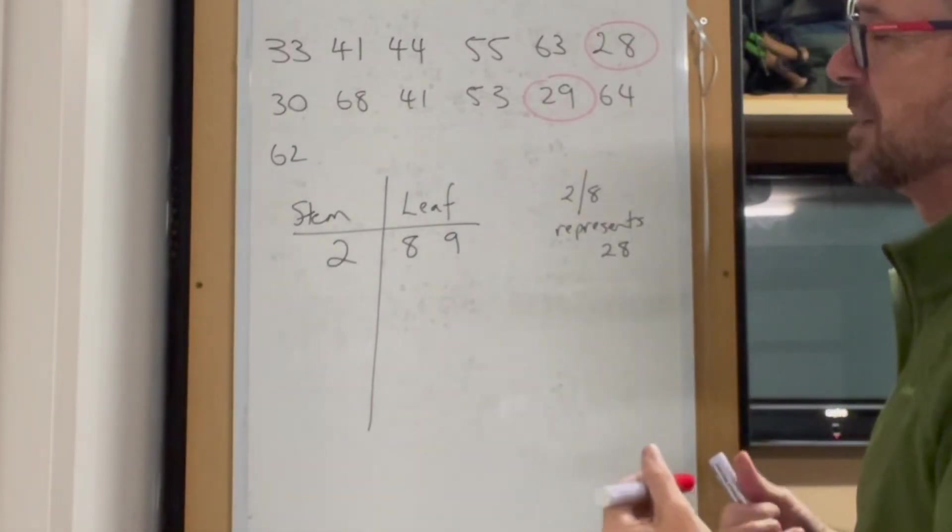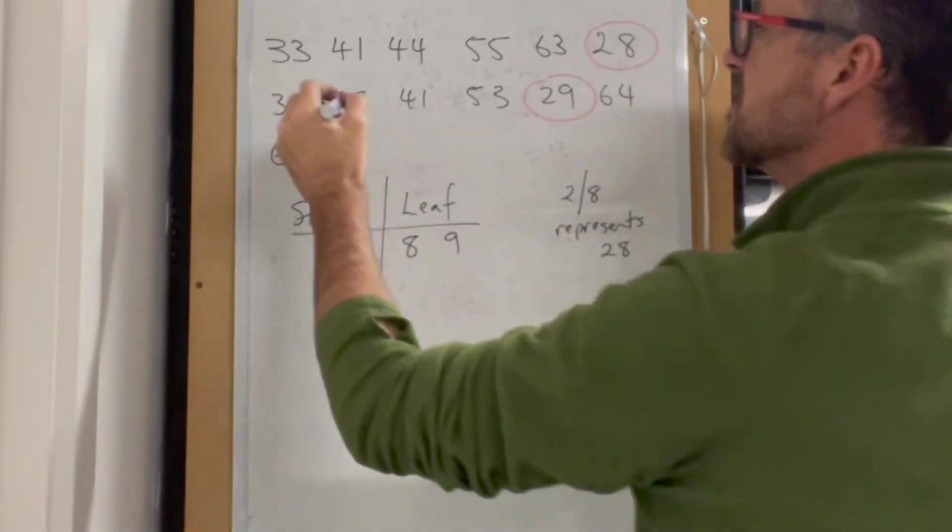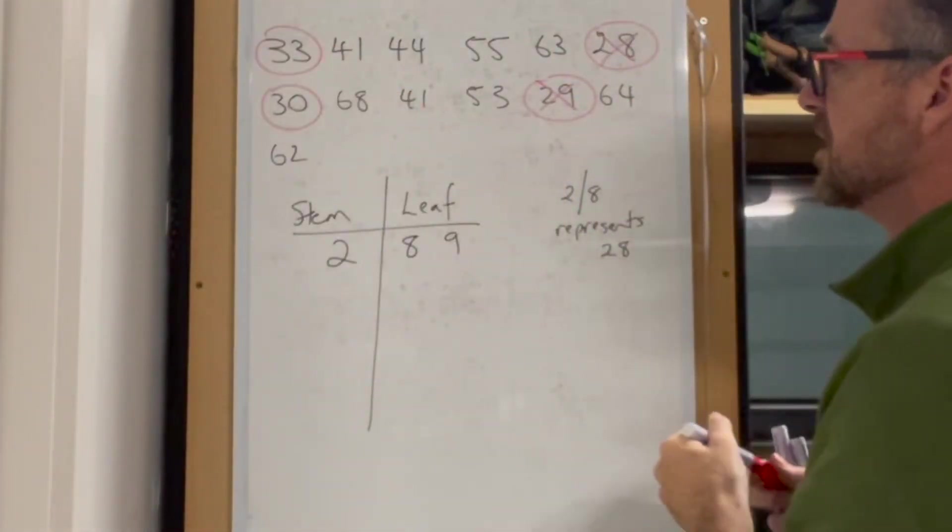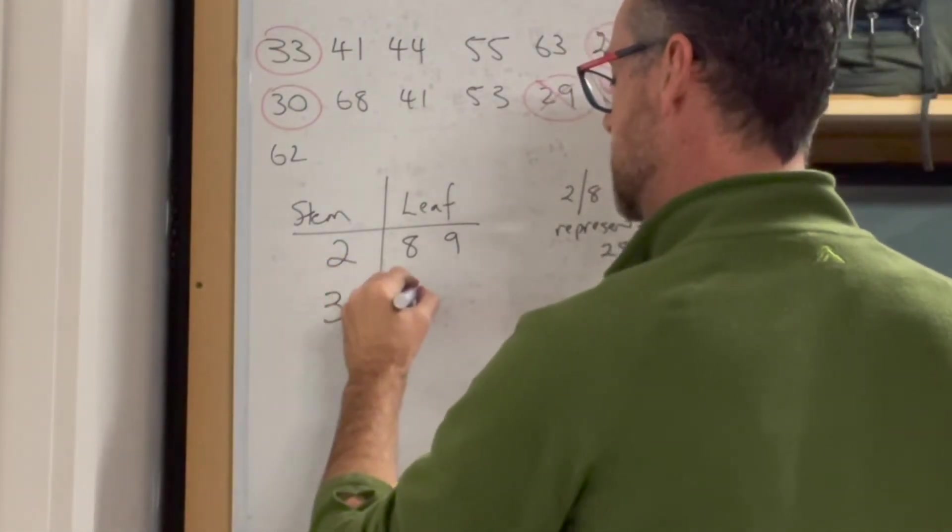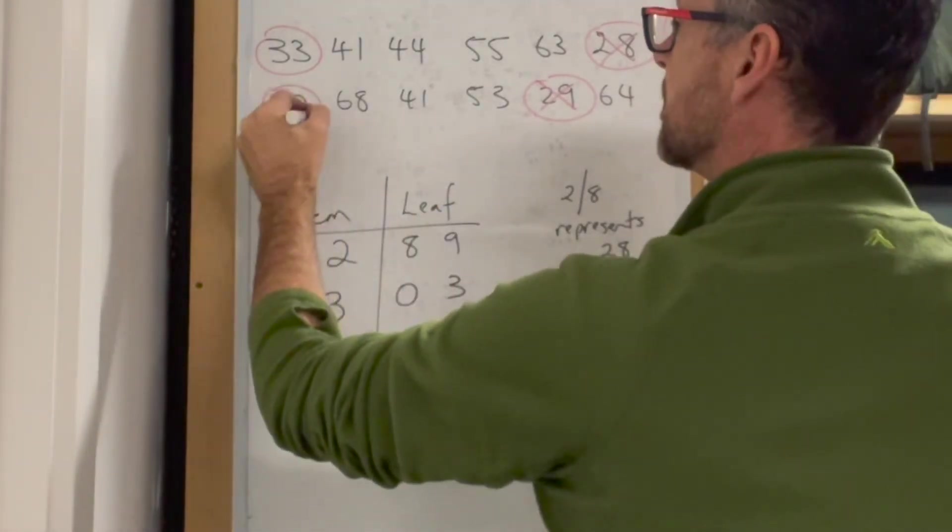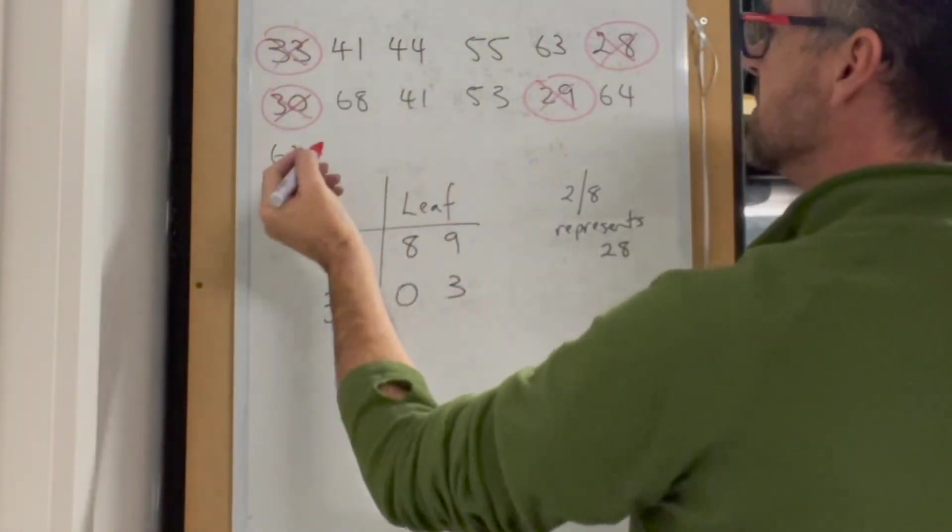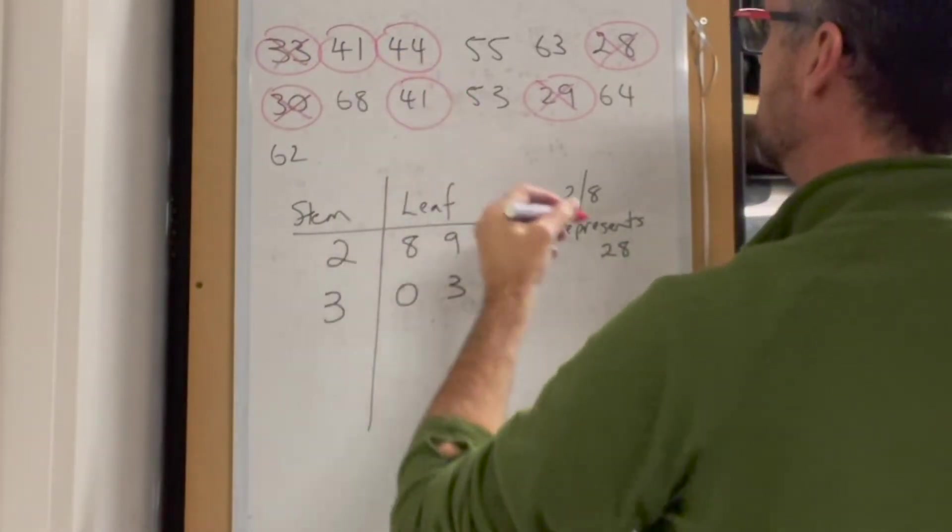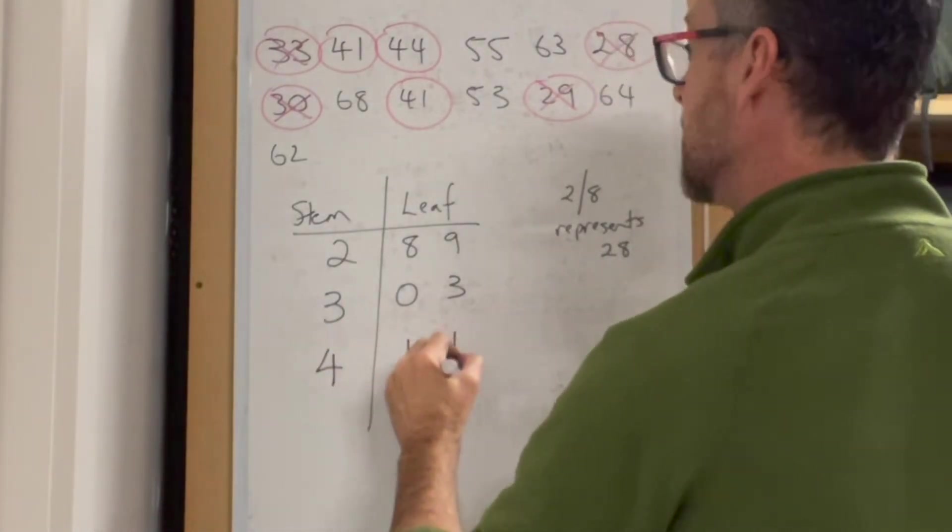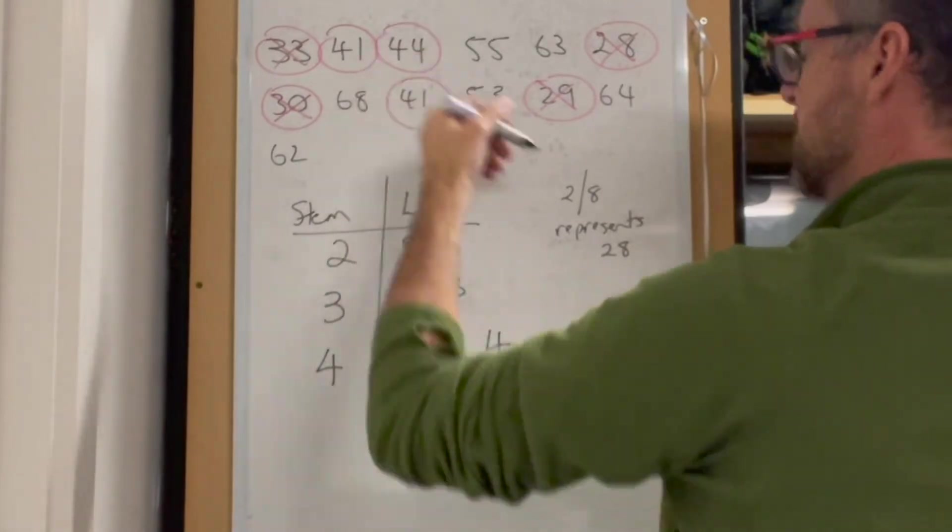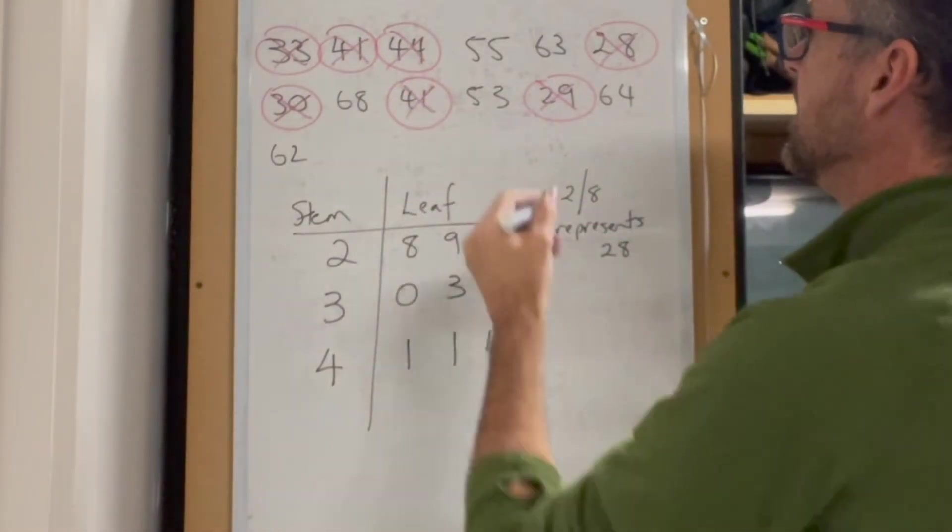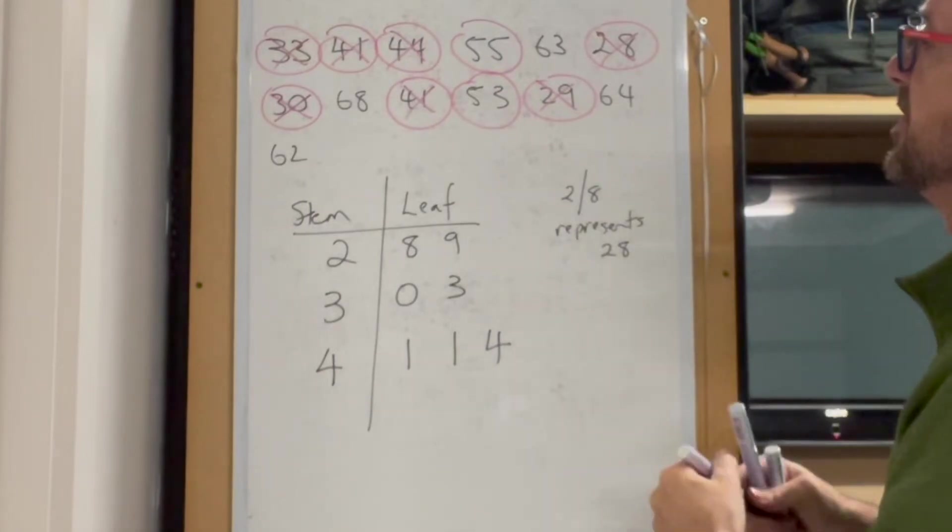Now the 30's: I've got 30 and 33, so I cross them off and write 0 and 3. For the 40's: 41, 44, and 41. I'm noting that 41 happens twice, so 1, 1, and 4. By doing this I'm ensuring I'm not leaving any behind, and if I do, I'll identify them at the end.